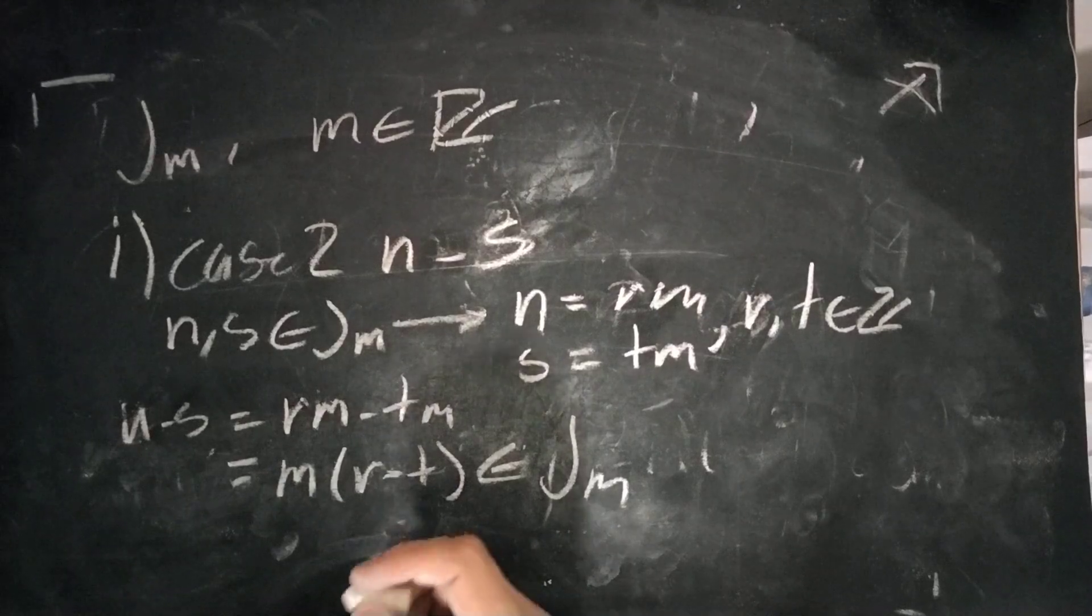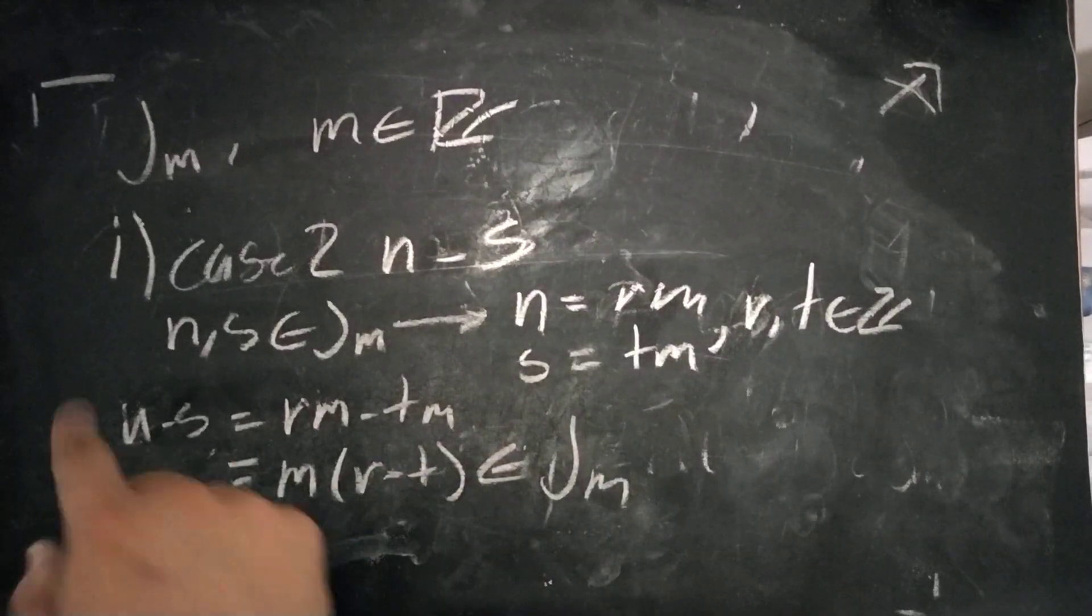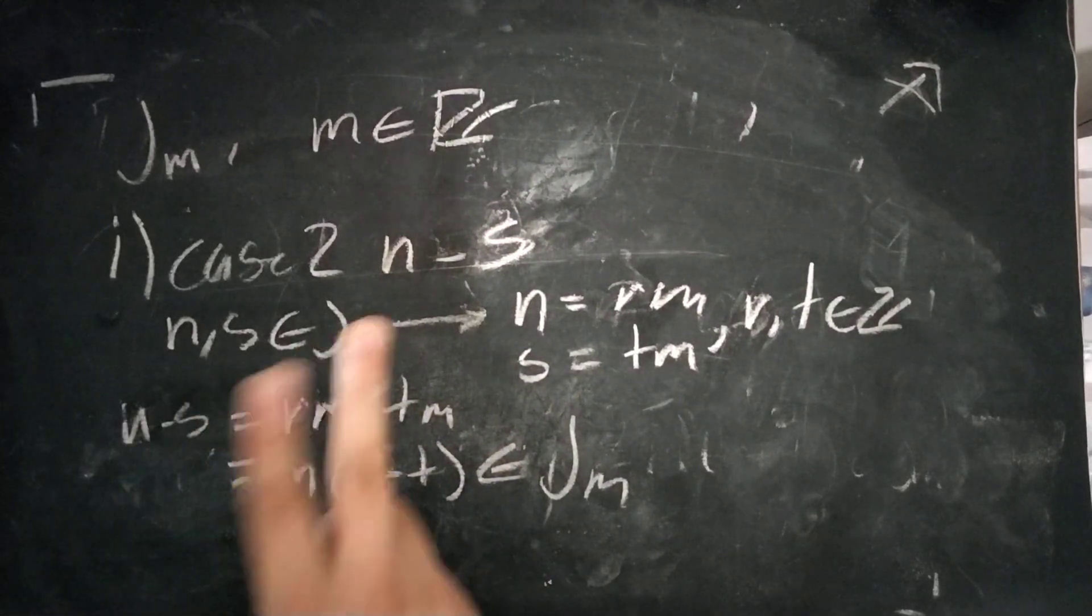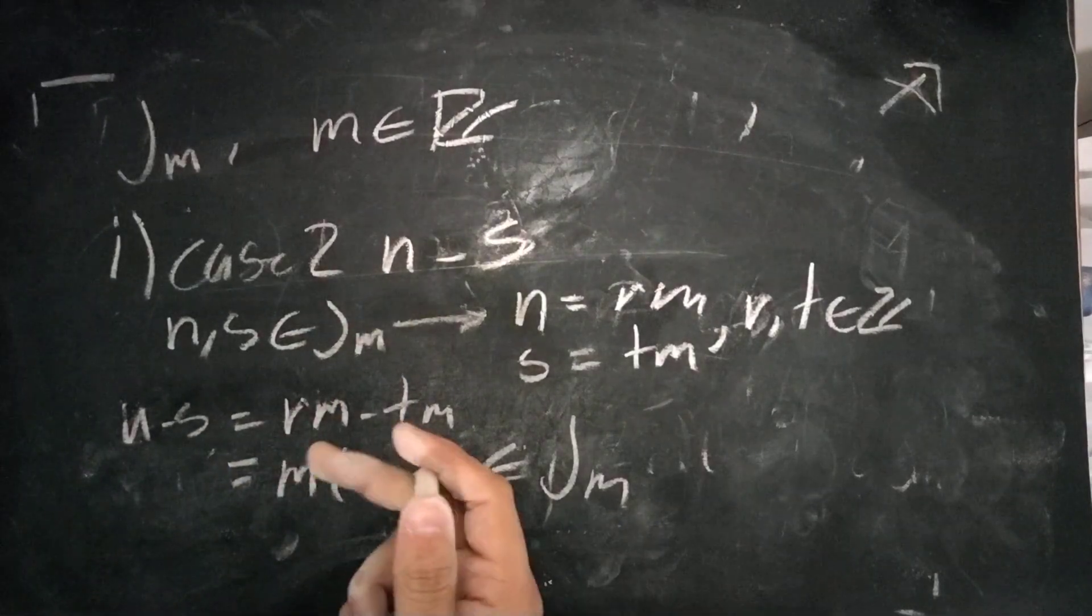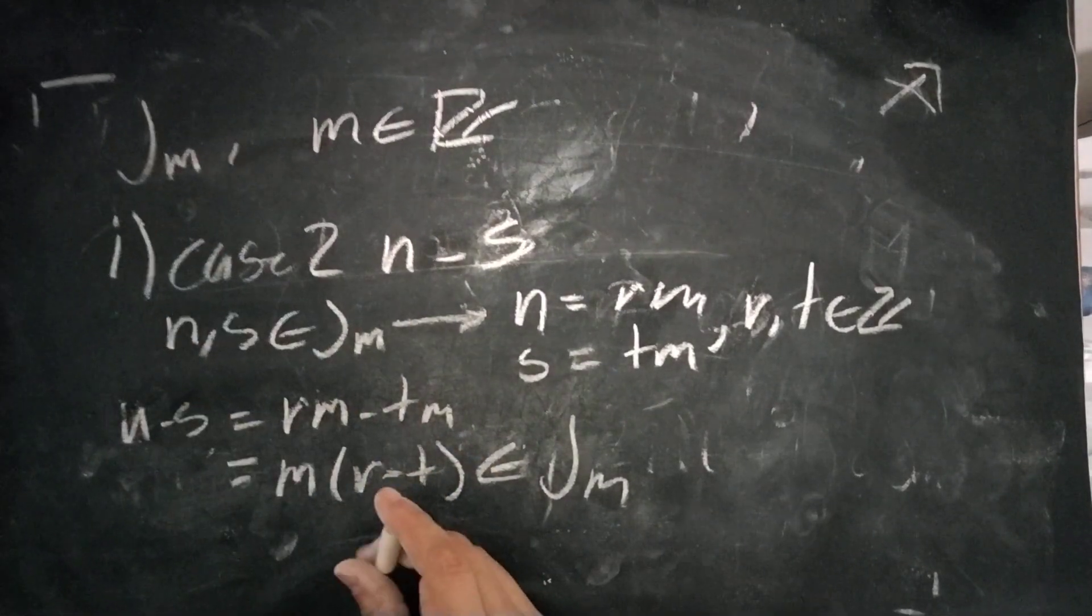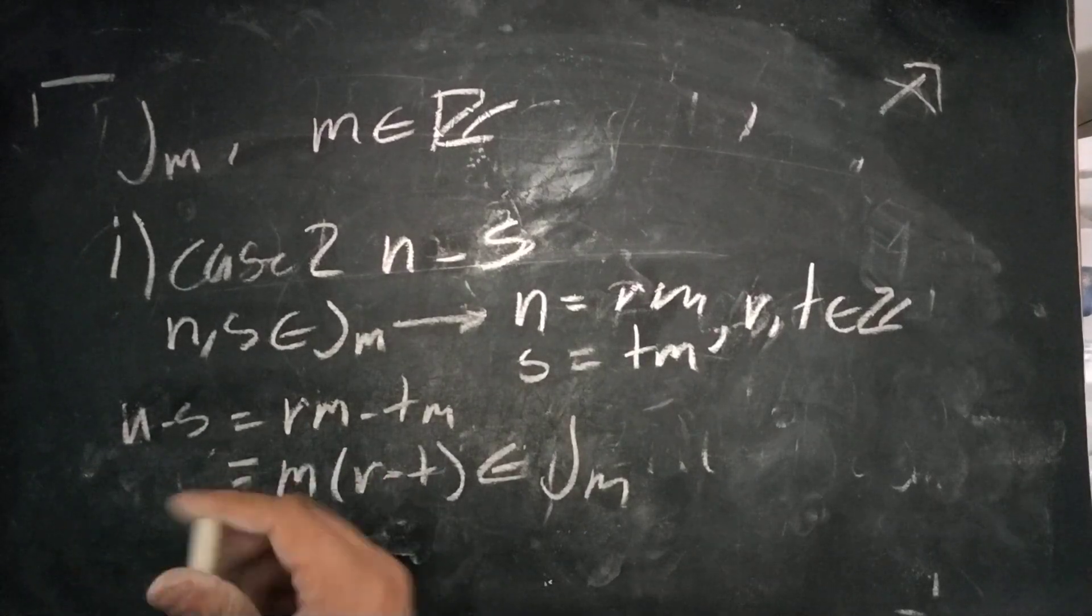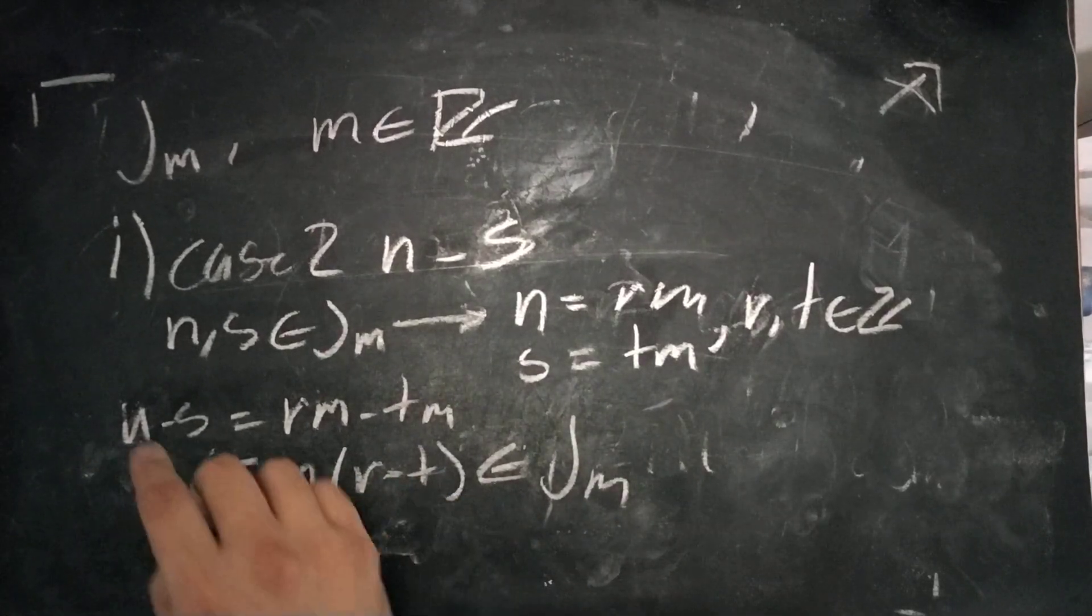So since we've shown both statements are true, one and two, then we've shown that J of m is an integer ideal. So the proof has been shown.